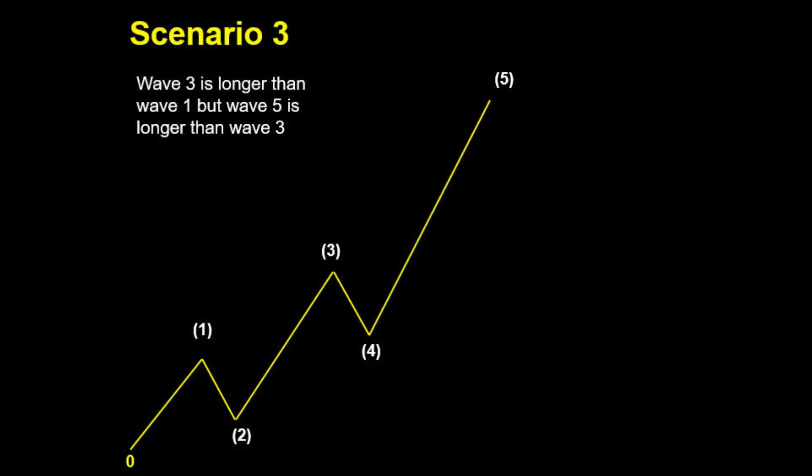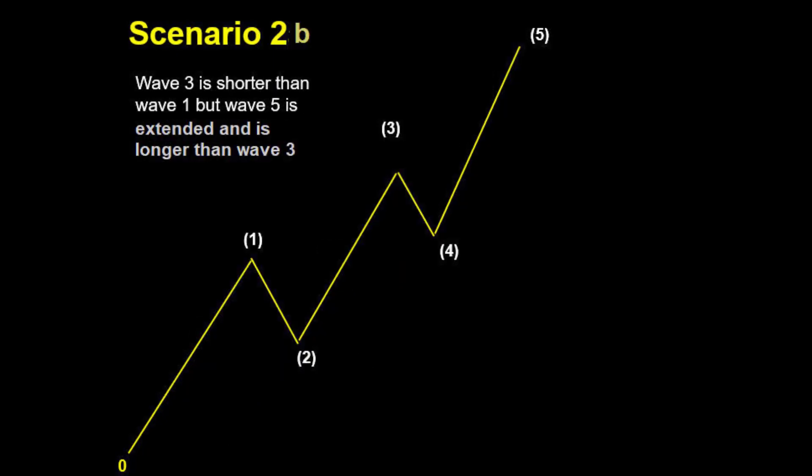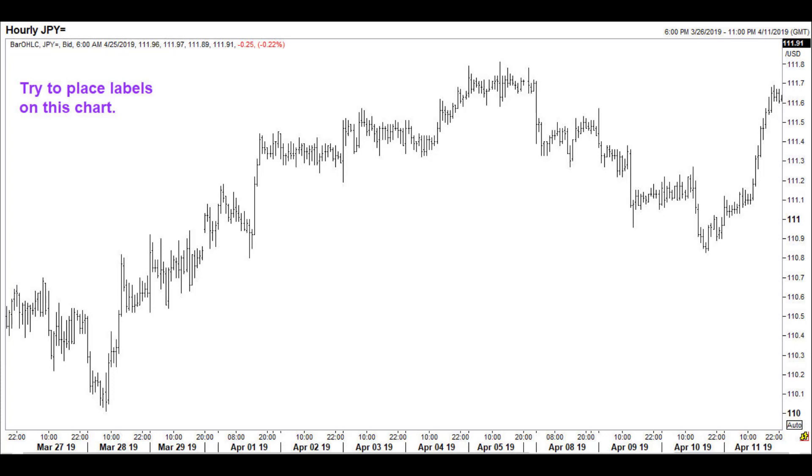So we have covered three scenarios. Wave 3 being smaller than both other waves is not allowed. The other two scenarios — where wave 3 is smaller than either wave 1 or wave 5 individually — are perfectly fine. What we don't want to see is wave 3 smaller than both of them. Let us look at some real-world charts now. See if you can label this hourly chart of dollar-yen.